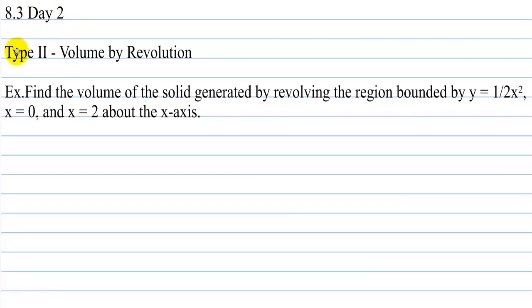Day 2, Type 2: Volume by Revolution. Example: find the volume of the solid generated by revolving the region bounded by y equals one half x squared, x equals zero, and x equals two about the x-axis.